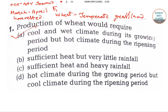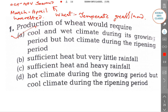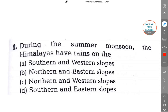Now let's move to the next question. During the summer monsoon, the Himalayas have rains on which slopes — the southern and western slope, northern and eastern slope, northern and western slope, or southern and eastern slopes? During the summer monsoon, the Himalayas get rainfall from the Bay of Bengal branch.